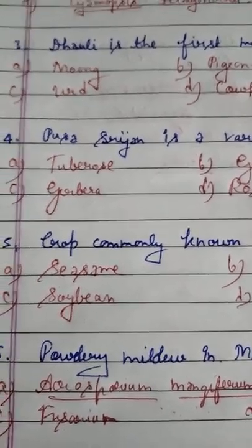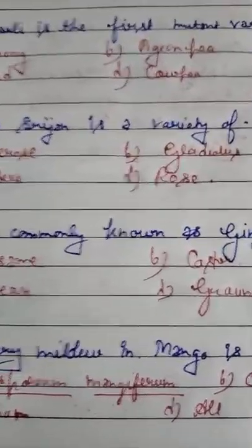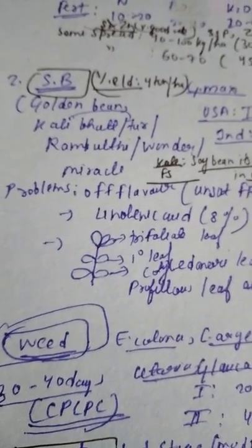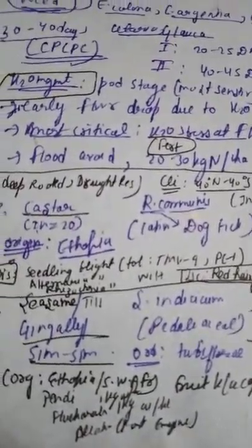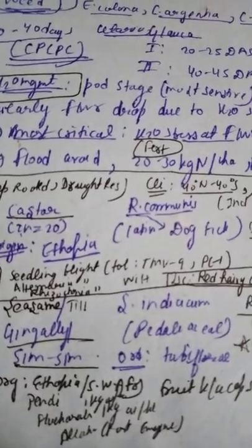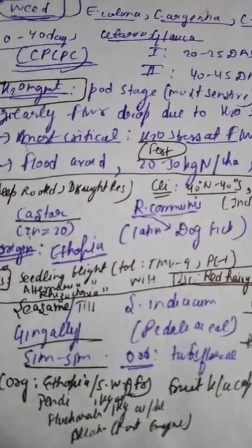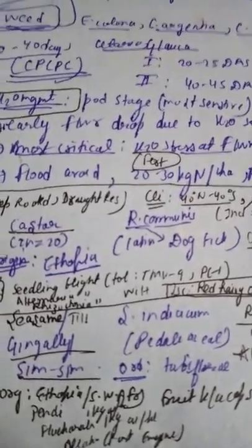Question number 5: Crop commonly known as gingli or sim sim — option A sesame, option B castor, option C soya bean, option D groundnut. Soya bean is known by many names: golden bean, kali bhat, ram kulti, wonder crop, and miracle crop. The scientific name of castor is Ricinus communis because it contains ricinoleic acid. Sesame is also called till, gingli, and sim sim. The most serious disease of sesame is phyllody.